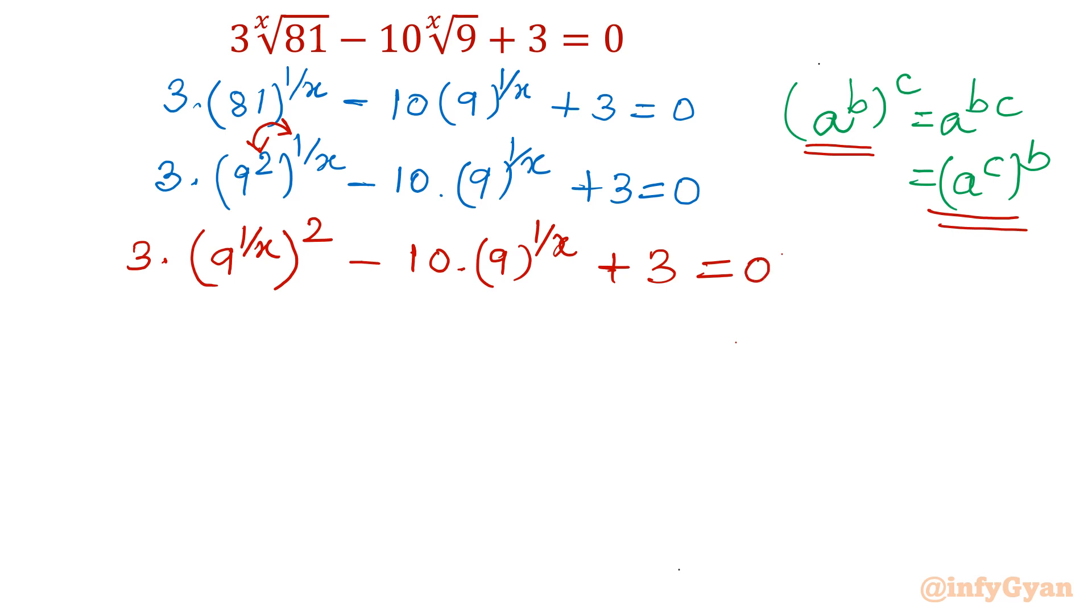Now it is easily visible. If I give substitution, let 9 power 1 over x is equal to t. So equation will convert into 3t square minus 10t plus 3 equal to 0.